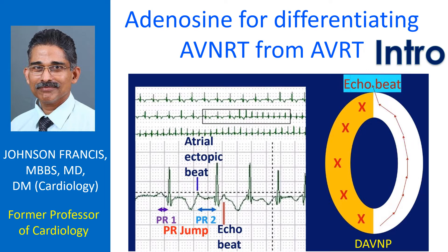Adenosine can induce a PR jump on surface ECG in those with AVNRT, which can be used to differentiate AVNRT from AVRT with a concealed accessory pathway.